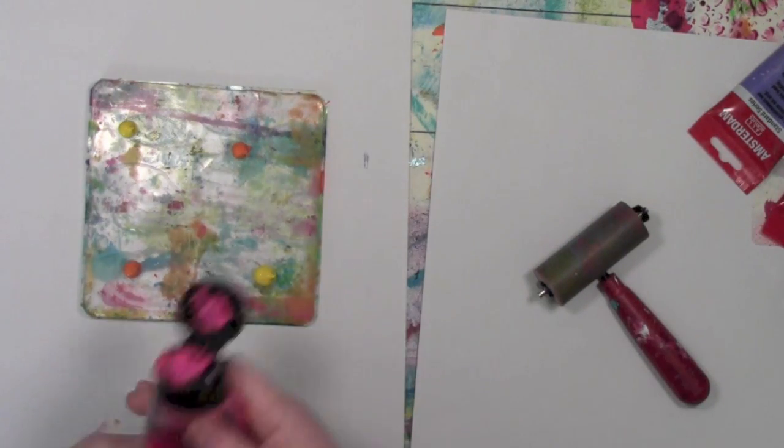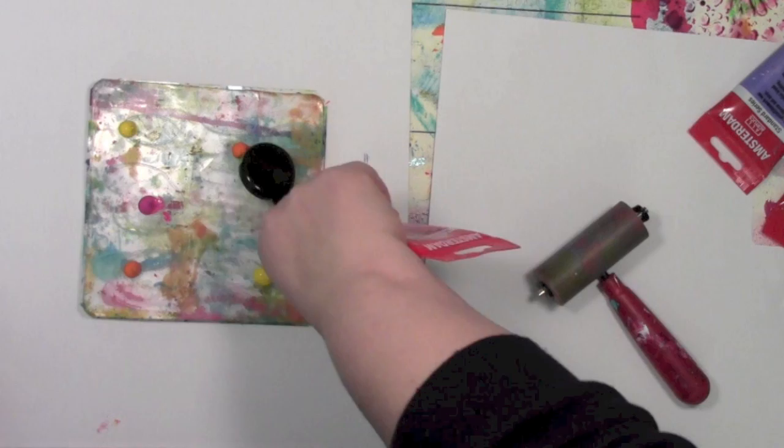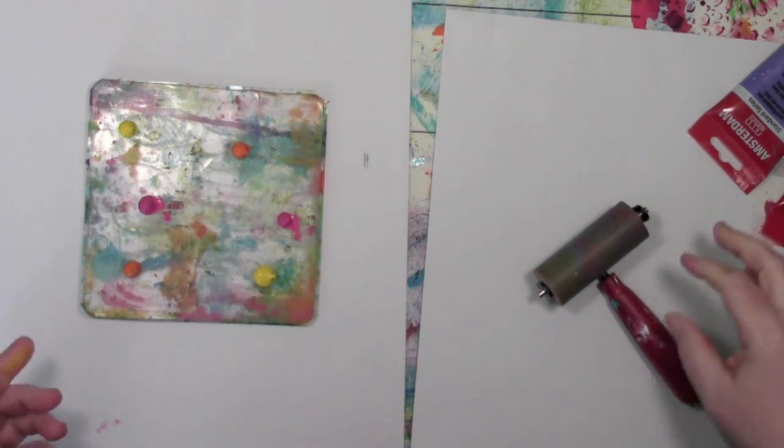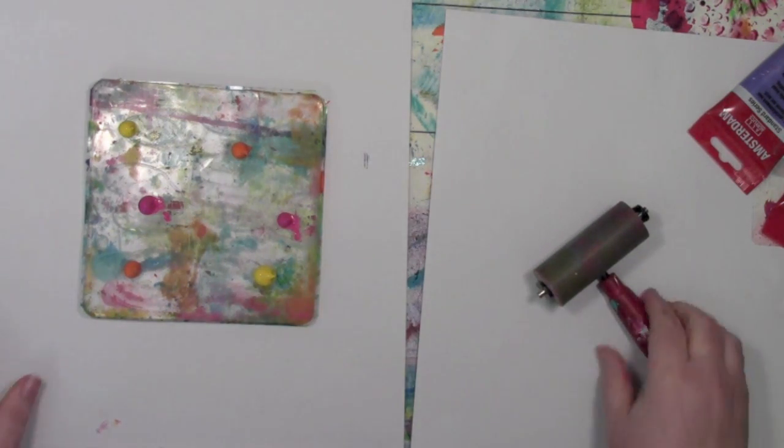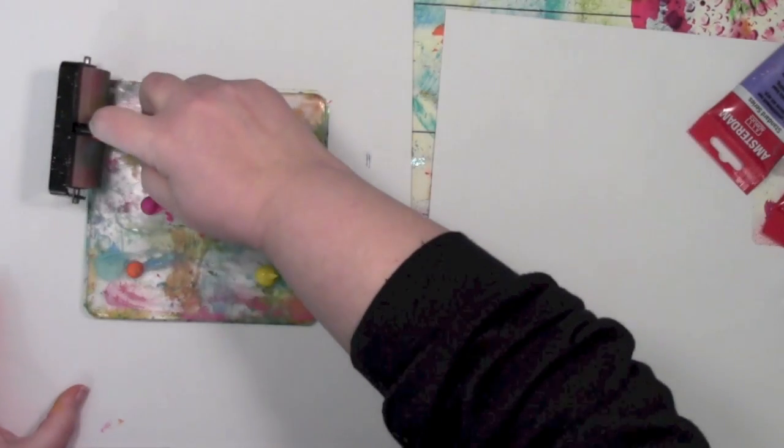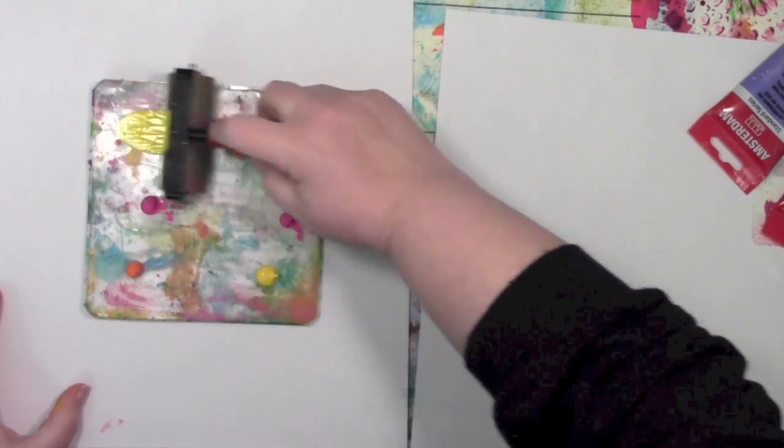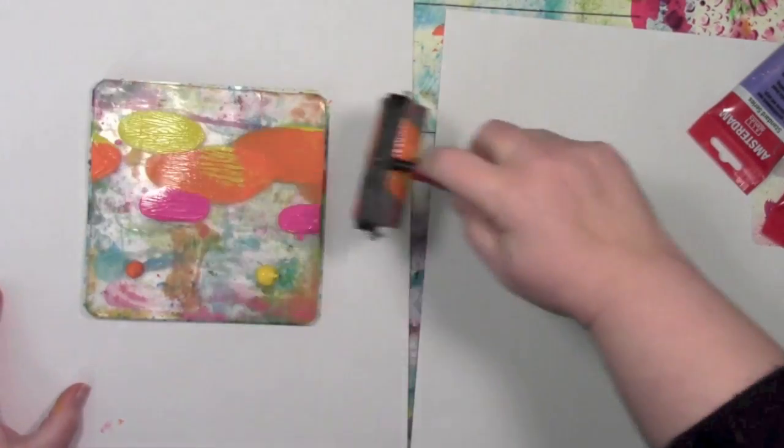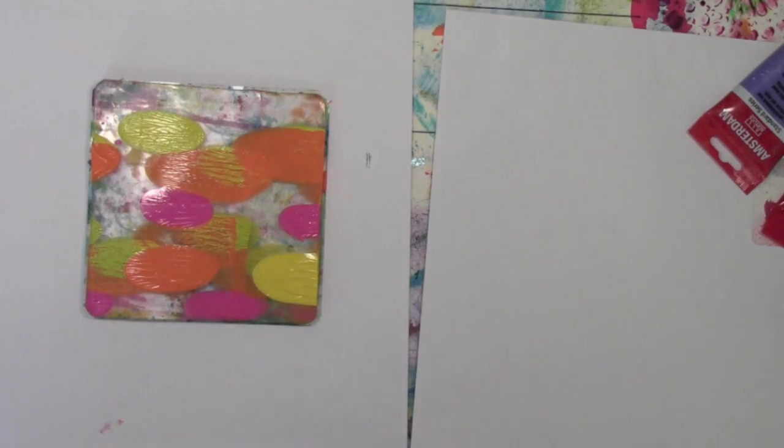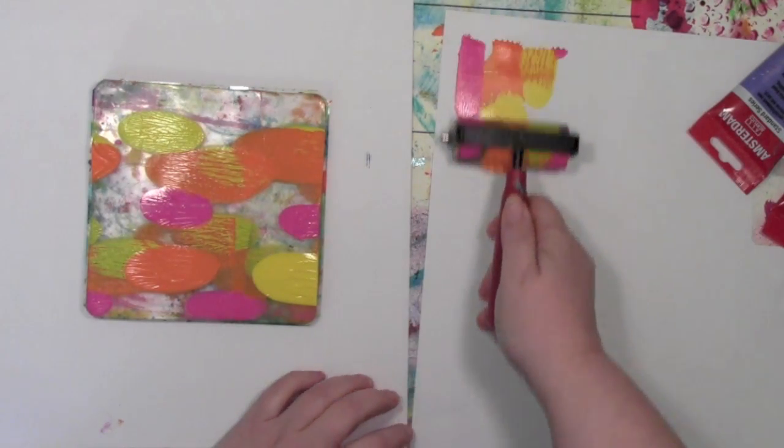I'm gonna be using a brayer, and I am using a smaller brayer. Any soft rubber brayer will work for this. As I pull back on it, I am not going to actually try and mix the paint a lot. I'm gonna leave those wonderful blobbies.